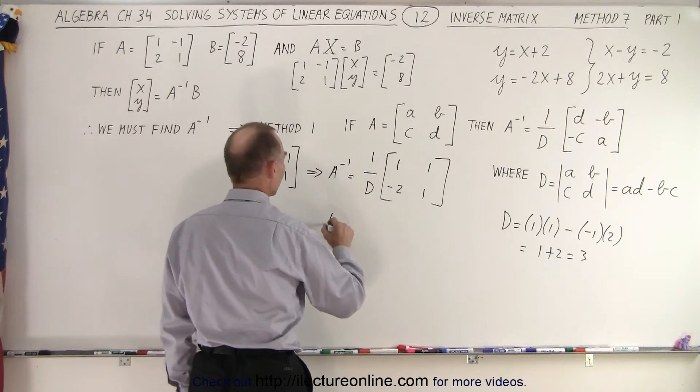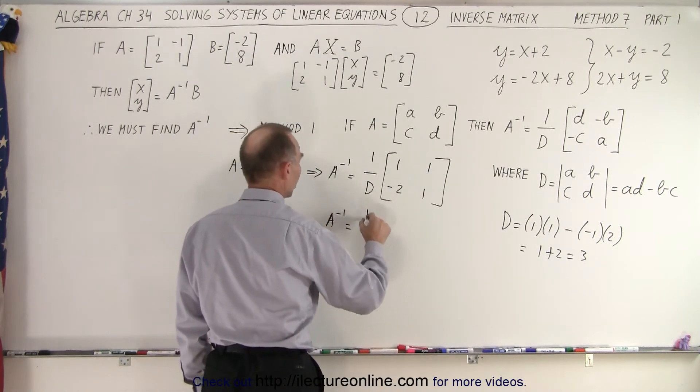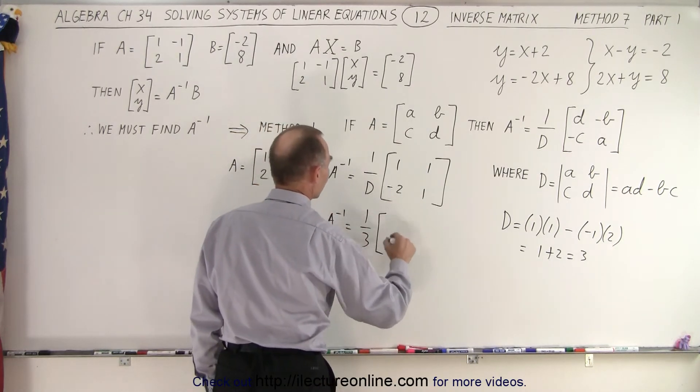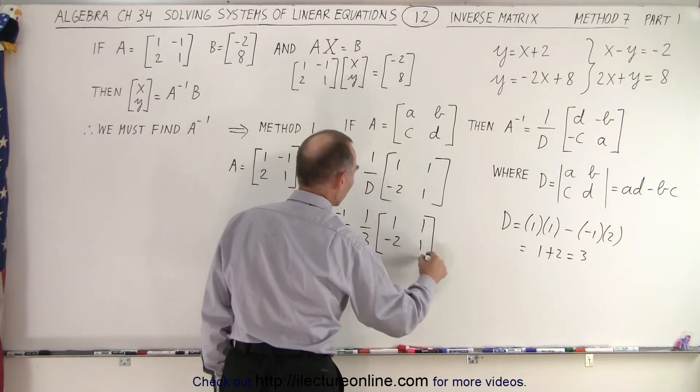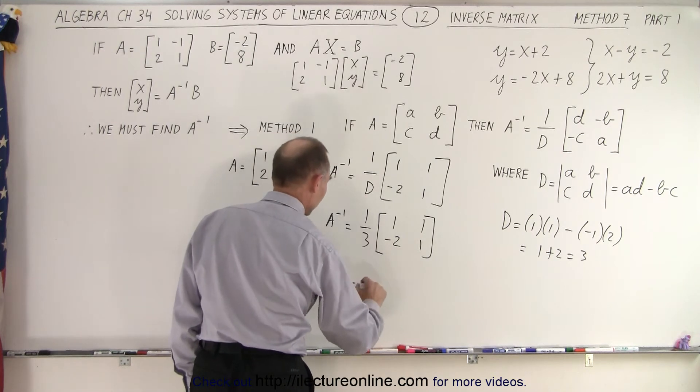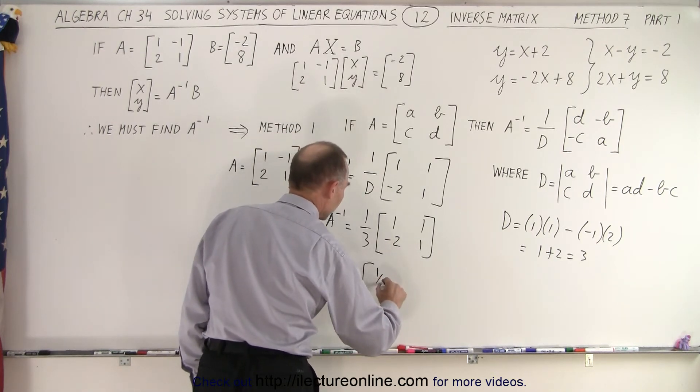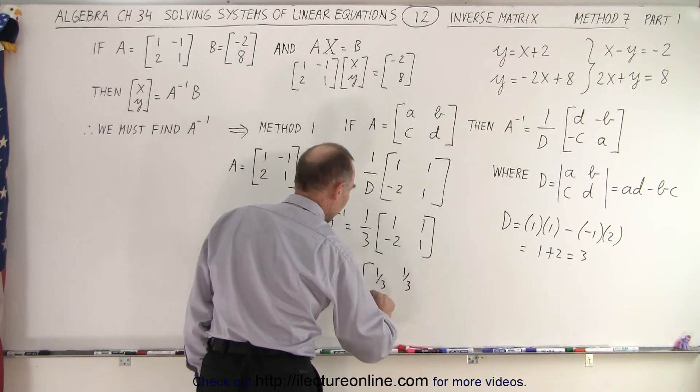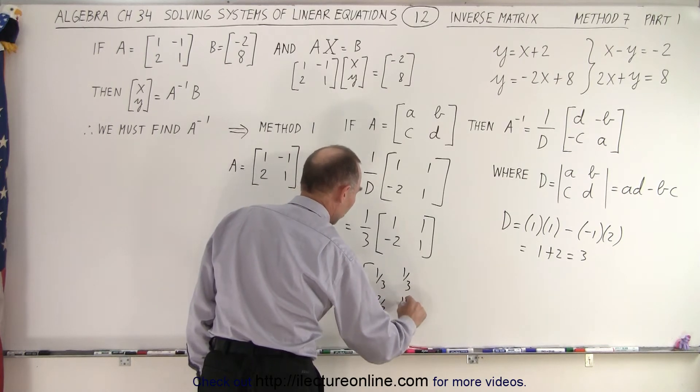So essentially, the inverse matrix is equal to 1 over 3 times 1, 1, negative 2, times 1, or you can simply multiply this inside, so this can be written as 1 third, 1 third, negative 2 thirds, and 1 third.